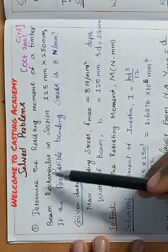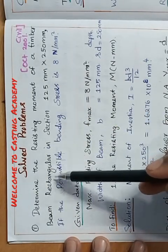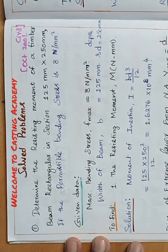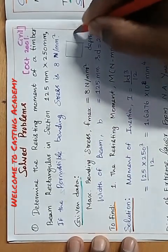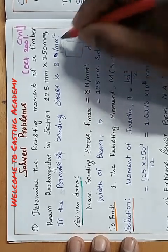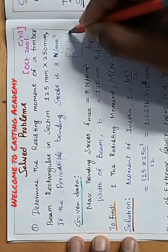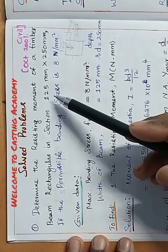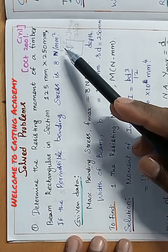Problem number one: determine the resisting moment of a timber beam that is rectangular in cross section, 125 mm wide and 250 mm deep. The depth is 250 mm and the width is 125 mm, with the neutral axis at the center. The permissible bending stress is 8 Newton per mm square.